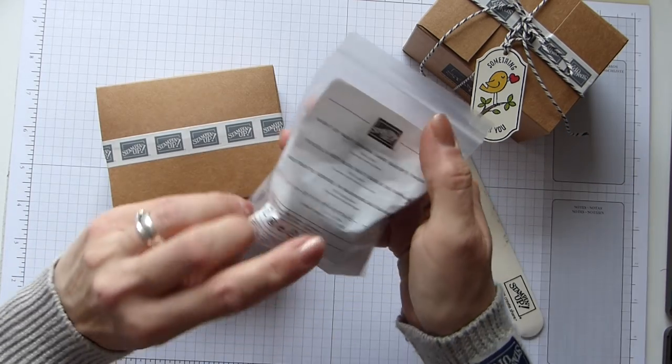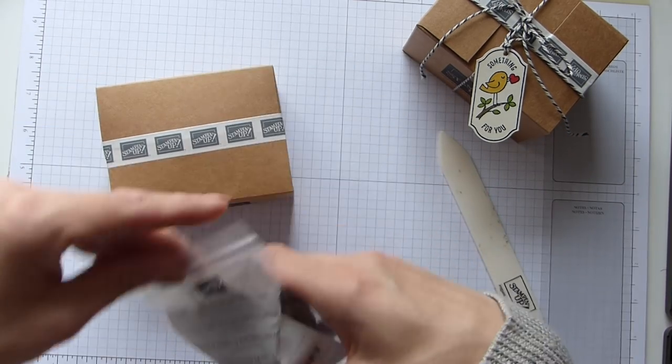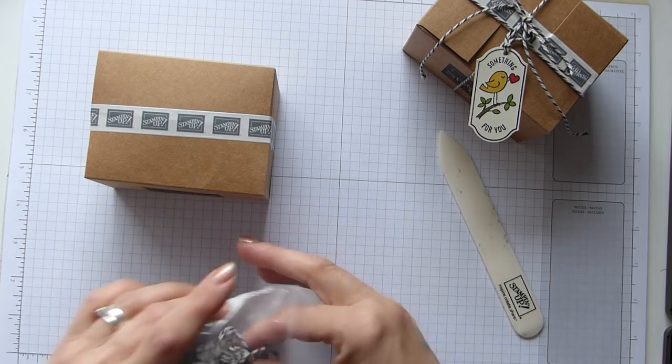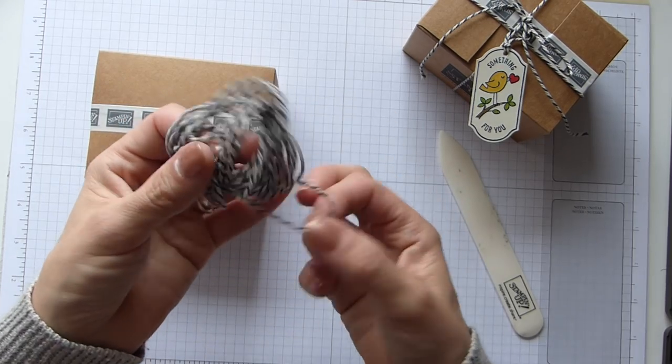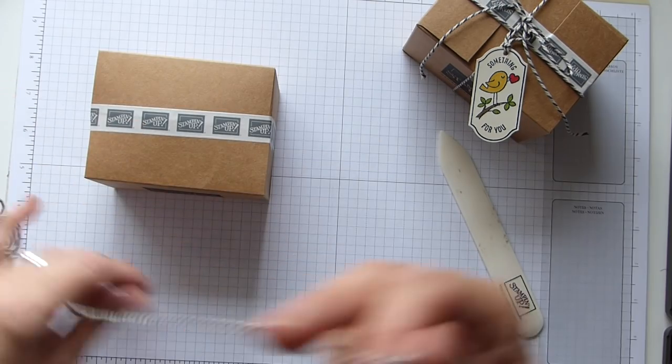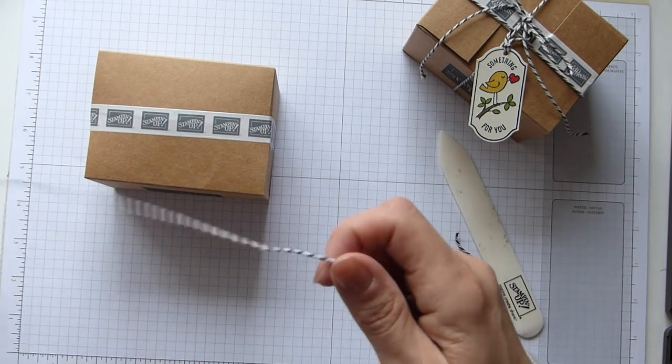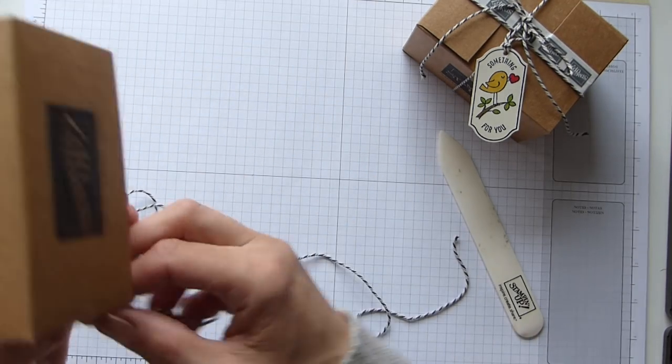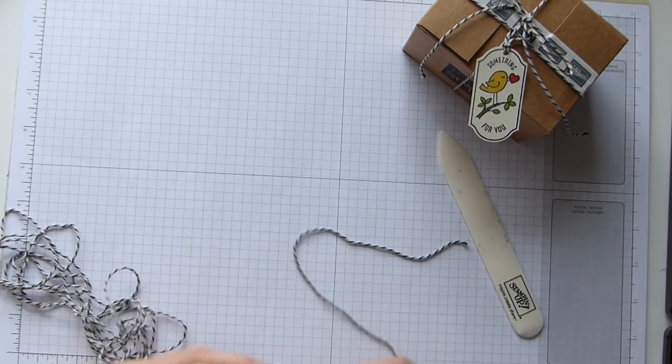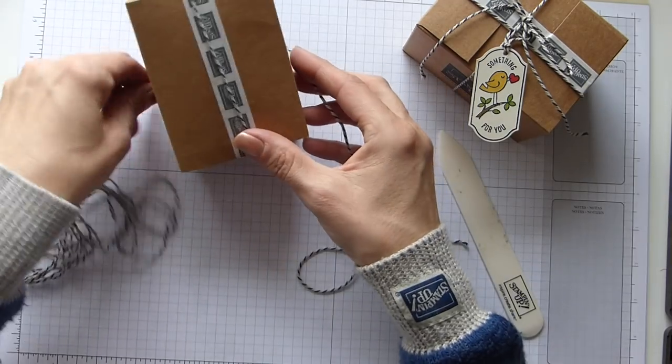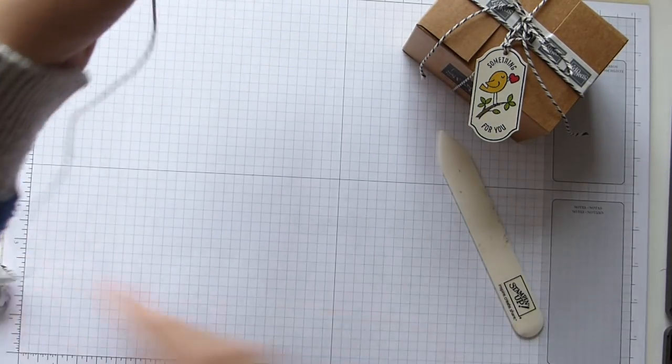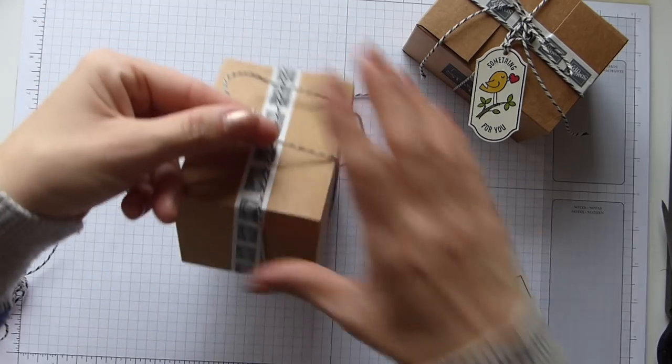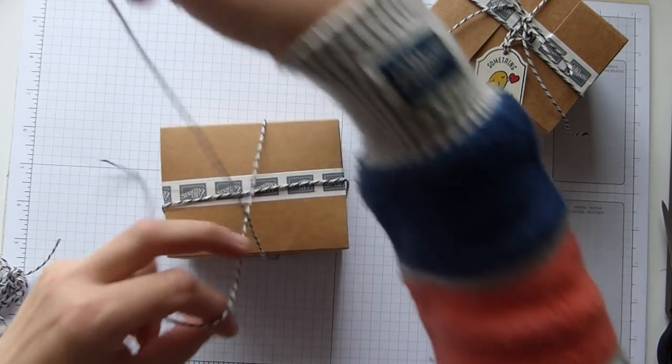I've gone with this beautiful Night of Navy and Sahara Sand bakers twine, and this is off the Come Sail Away suite. I've got some excess here and then I'm just simply going to wrap it round my box and cut the length off there. I'm not going to tie it yet for the moment because I want to do my tag first.